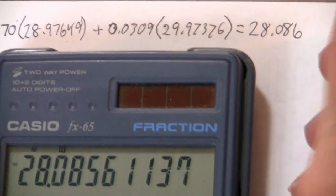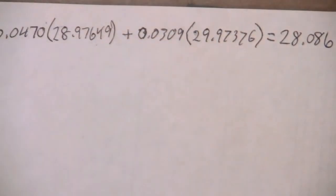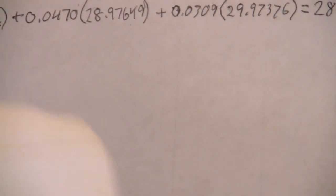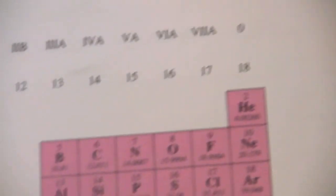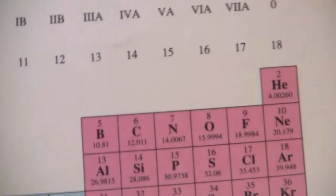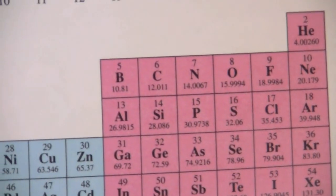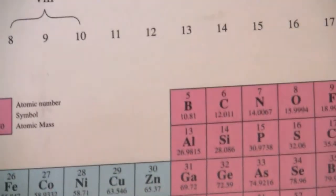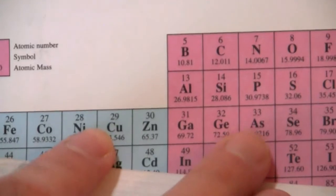And we can verify that using the periodic table. If we look here, silicon has a mass of 28.086, if you can see that there.